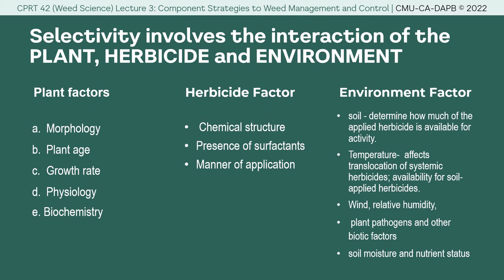Plant factors could be about morphology, the age of the plant, growth rate, physiology and biochemistry, and the architecture — especially how the plant looks and even its surface. Whether the plant surface is rough or smooth affects the retention of the applied herbicide. In terms of the herbicide factor, it could be about the solubility — whether it is polar or non-polar, water-based or oil-based — the formulation, vapor pressure, and specific gravity, which signifies the configuration of the herbicide when it reaches the plant.